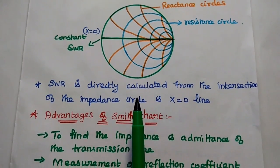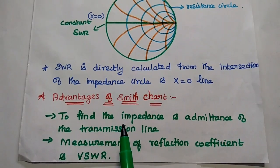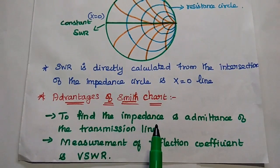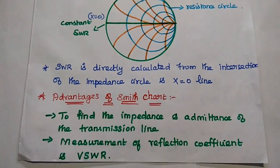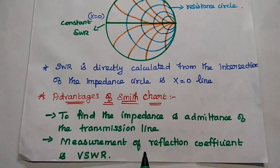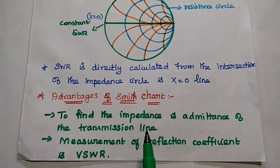The major advantages of Smithchart are given here. It is mainly used to find the impedance and admittance of the transmission line, to measure the reflection coefficient and voltage standing wave ratio. We can easily find out the load impedance and source impedance from this Smithchart.